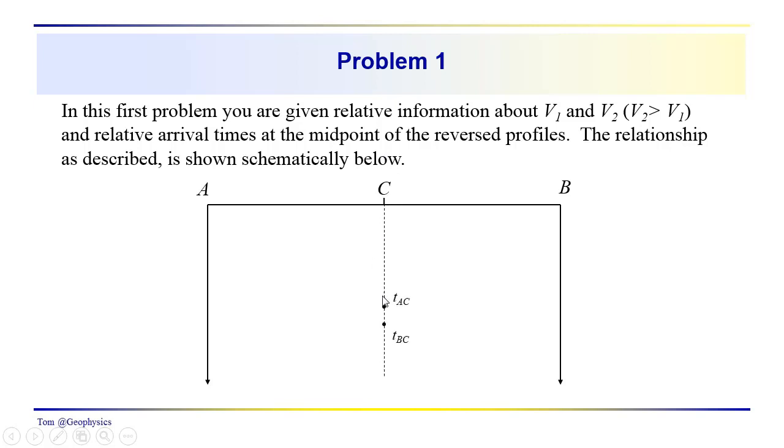It goes without saying that V2 is greater than V1, otherwise we wouldn't have a critical refraction. We're given that the critical refraction arriving at the midpoint generated by the source at A comes in earlier than the critical refraction generated by the source at B. So what does that tell us? That's two pieces of information.